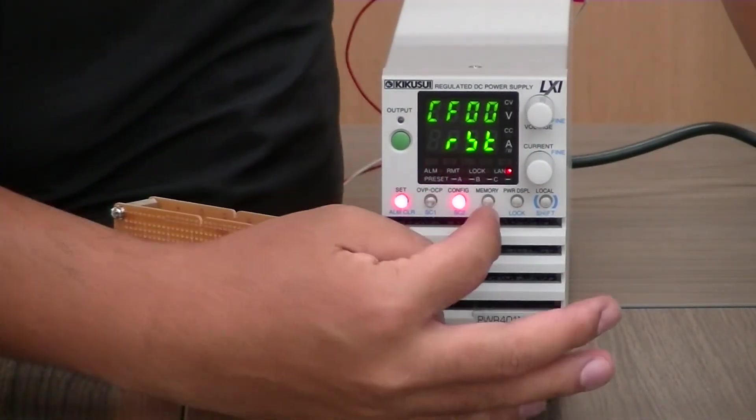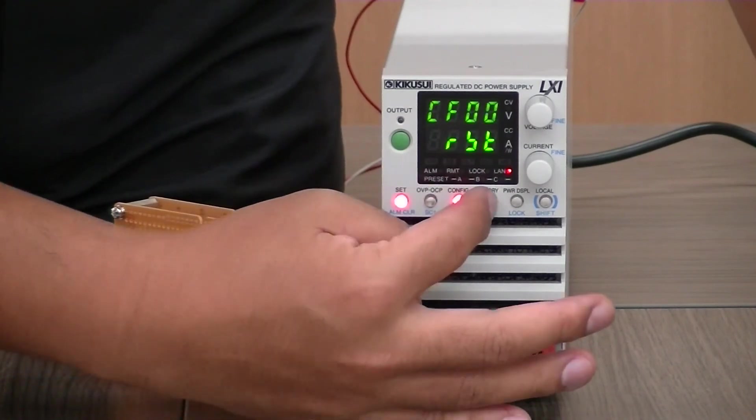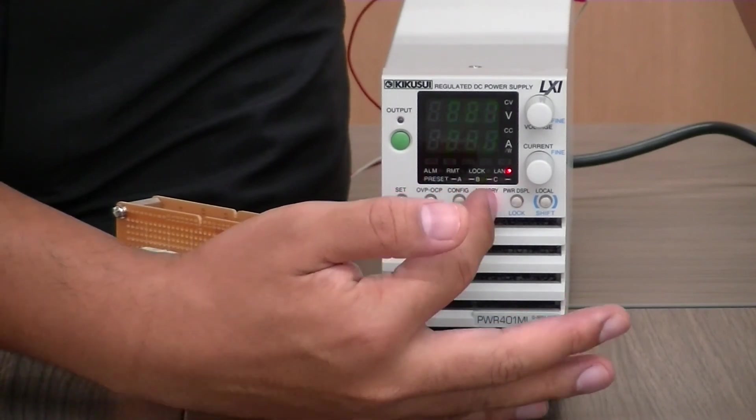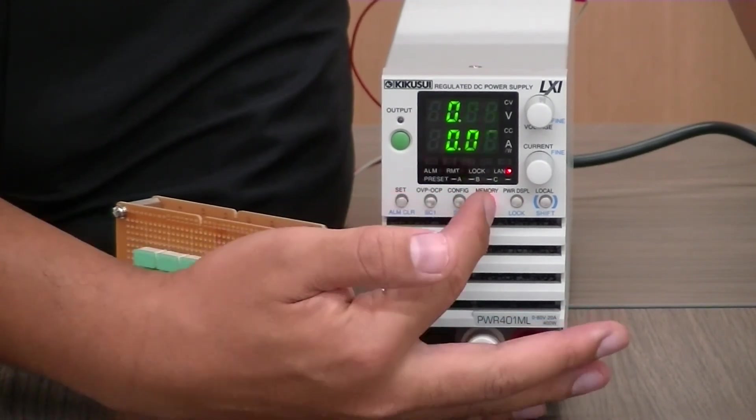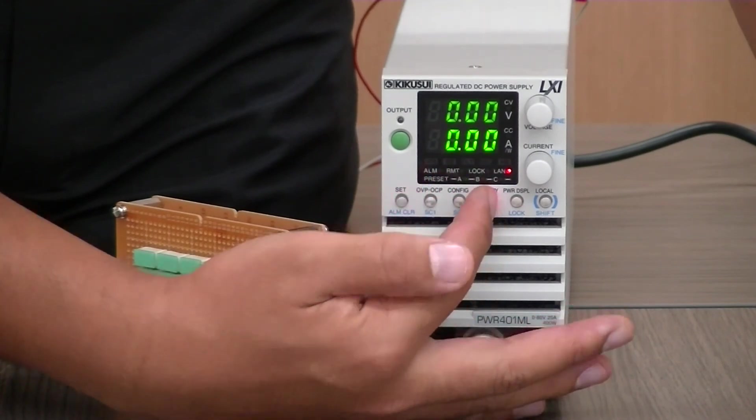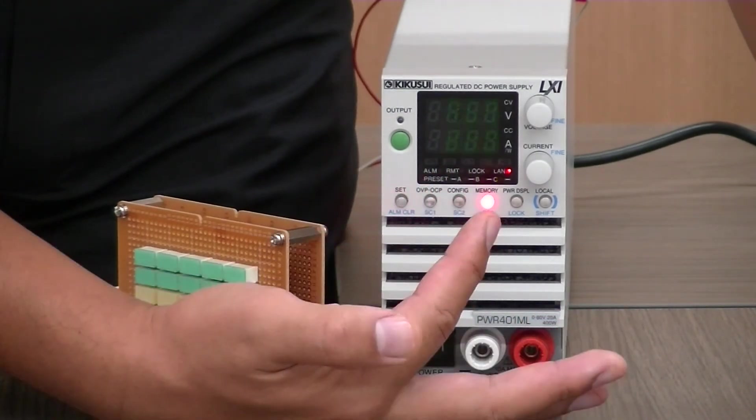And you have the config, and you have the memory, the memory A, B, C. So if you press the button, the preset A memory slot will highlight it, press it again B, C and vice versa.